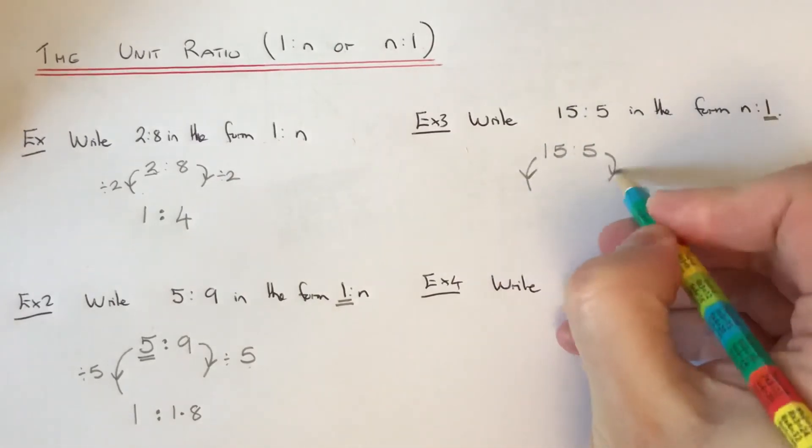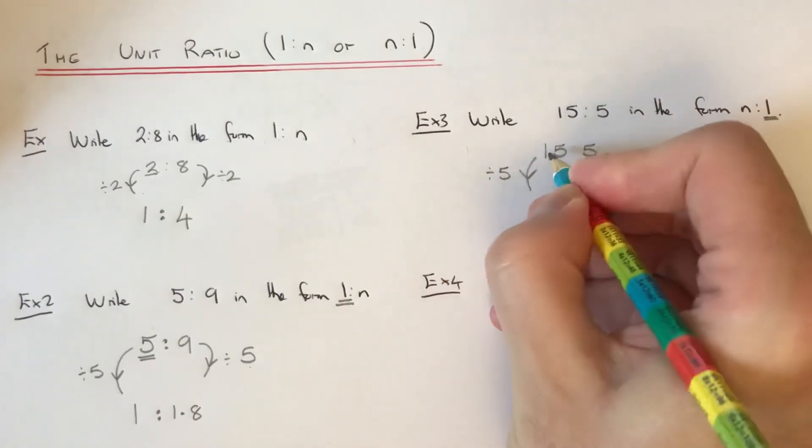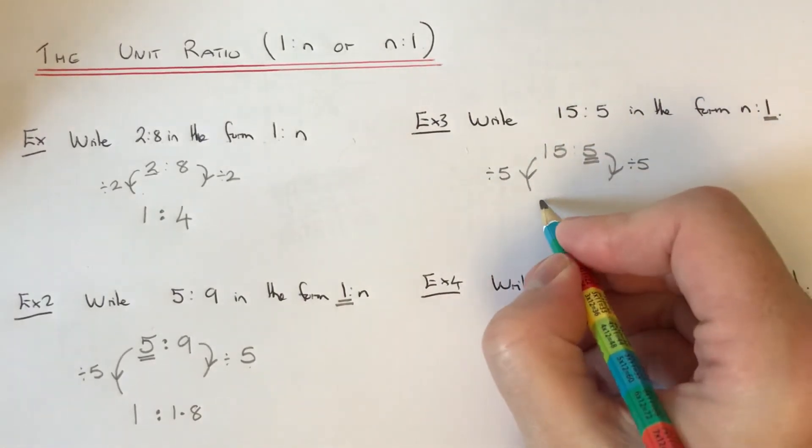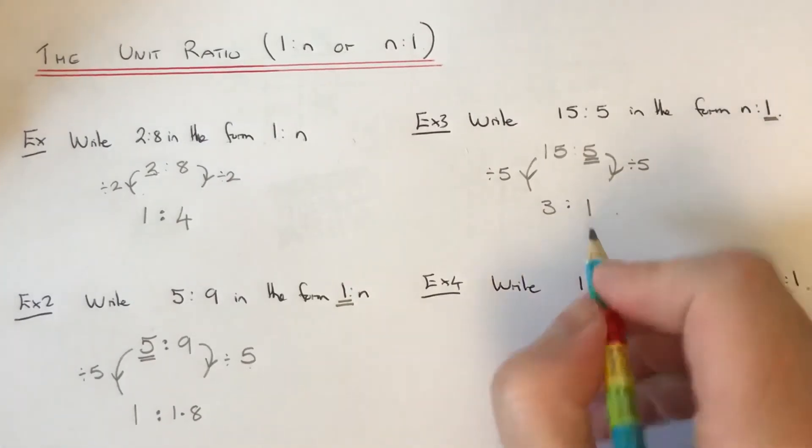So this means we need to divide by the number on the right hand side, which is 5 this time. So 15 divided by 5 is 3. 5 divided by 5 is 1.